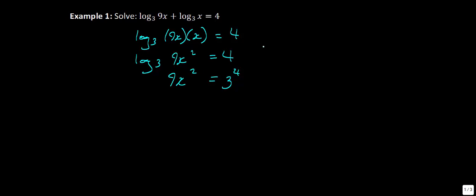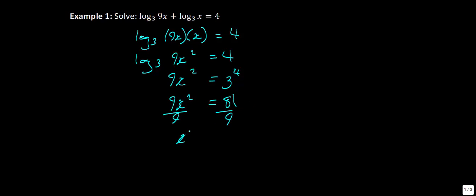I like leaving my variable on the left-hand side. 3 to the power of 4 is 81, so we have 81 equal to 9x². Dividing both sides by 9, x² equals 9.